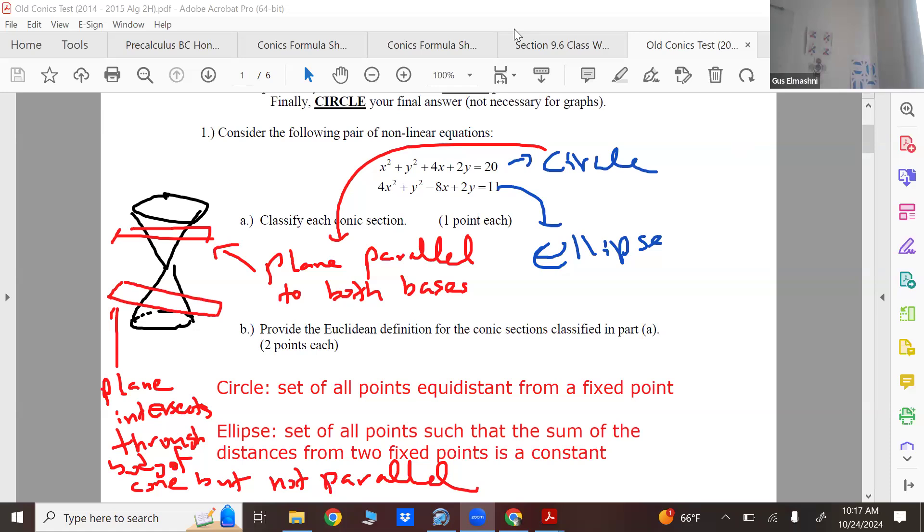The clean definitions again: circles have all points equal distance to a fixed point, the fixed point being the center, that distance being the radius. Ellipses have all points such that the sum of the distances from two fixed points is a constant. Those two fixed points are the foci.